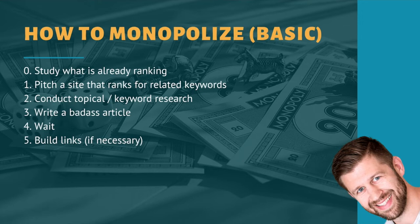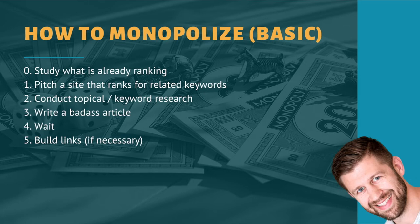Here's a basic understanding of how to monopolize search. We don't want to rank our own website. Before you even get started, study what's already ranking — this is such a crucial step that so many people miss. Google the thing you want to rank for. So many people jump into SEMrush and Ahrefs and forget to just Google what is already ranking and look at that. Then, before you start writing anything, pitch a site that ranks for related keywords — see if you can get a guest post there, or see if one of the writers for that website is open to including you in their next article. Then conduct some topical and keyword research, write a badass article, and then just chill and wait to see where it settles out. Check if you're on the first page.